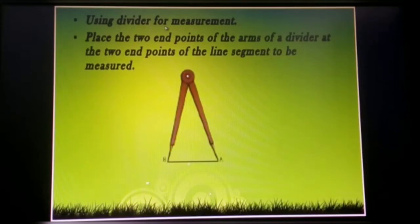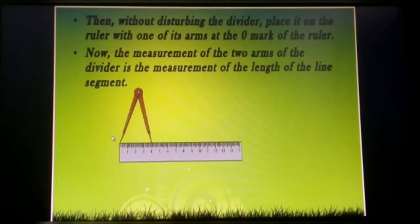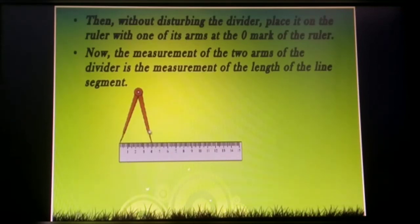Now, using the divider for measurement. When you are using the divider, place the two arms of the divider at the two end points of the line segment to be measured. Then, without disturbing the divider, place it on the ruler with one of its arms at the zero mark of the ruler. Now the measurement between the two arms of the divider gives the length of the line segment. We can see that the measurement in this figure is 4 cm.